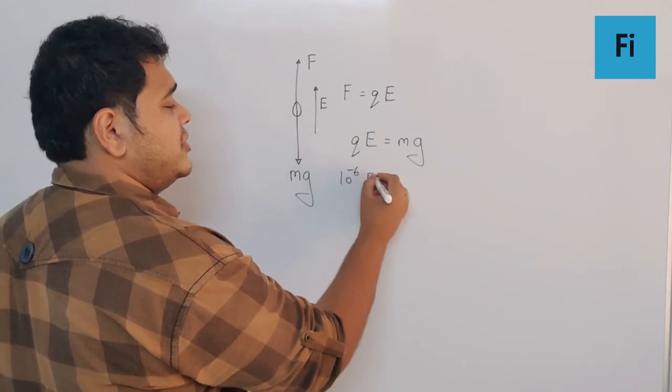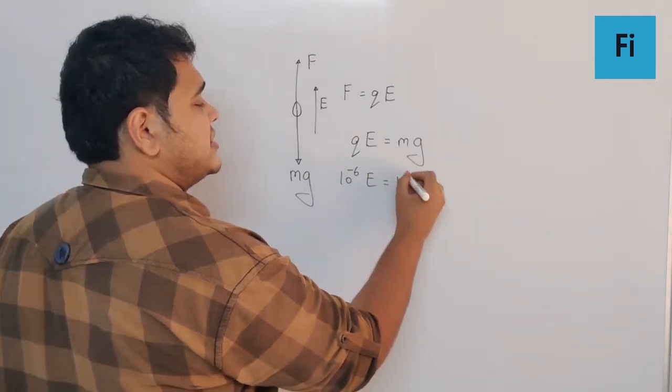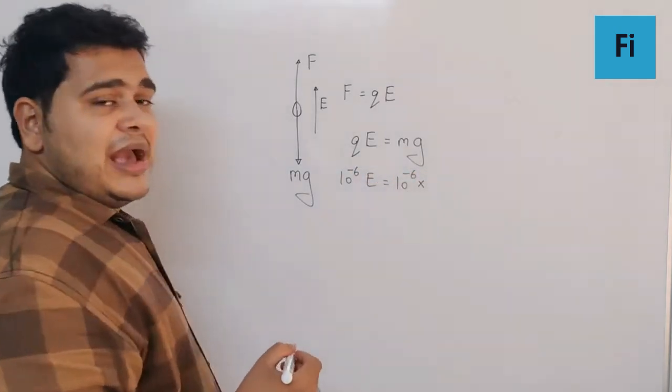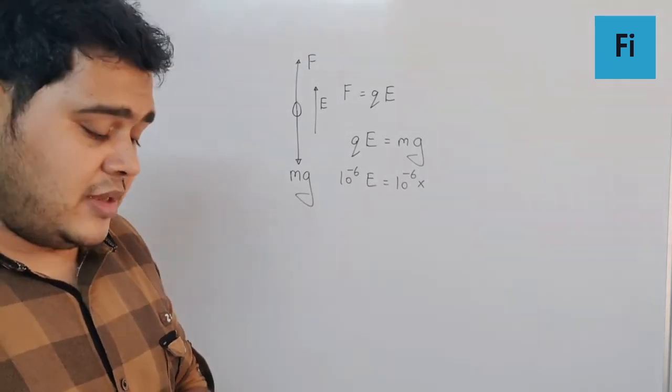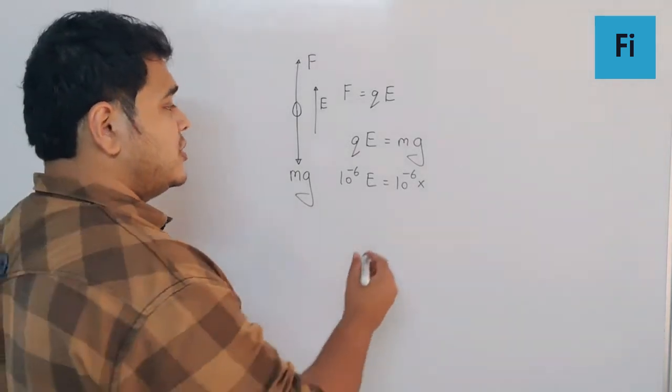The charge is given as 10 raised to minus 6 Coulomb, mass is given as 10 raised to minus 6 kg, and the gravity generally we tend to take it as 9.8, but here in the question itself they have mentioned to take it as 10.